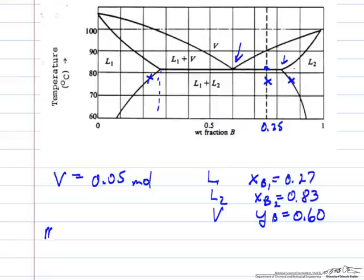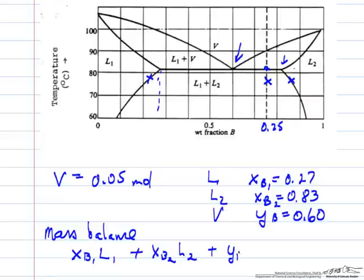I can do a mass balance on component B. I'm saying the number of moles of B in liquid 1, that's the mole fraction of B in liquid 1 times the amount of liquid 1, plus the number of moles of B in liquid 2, mole fraction B in liquid 2 times the amount, plus the number of moles of B in the vapor phase, which is mole fraction times the number of moles.